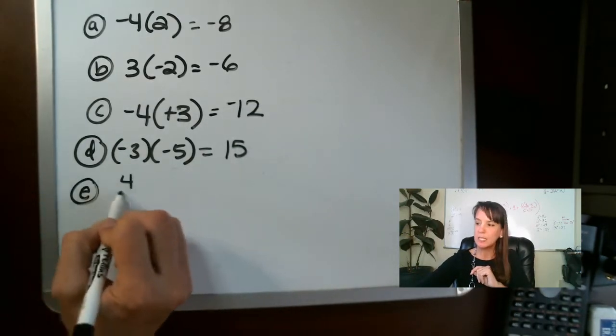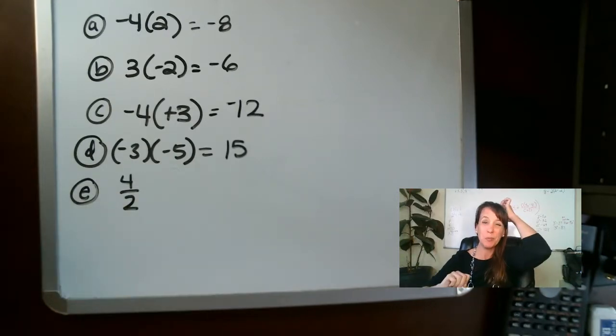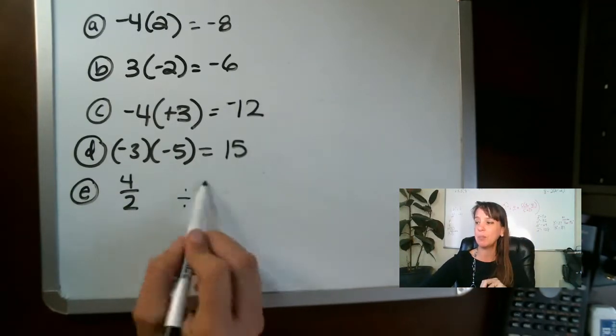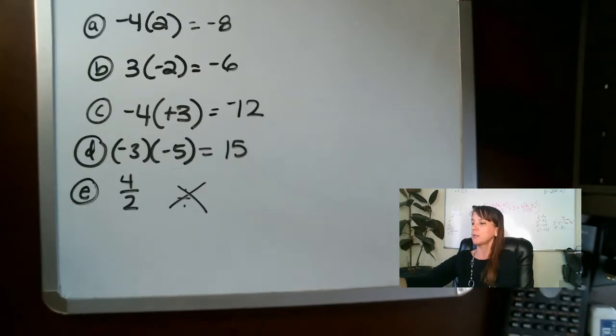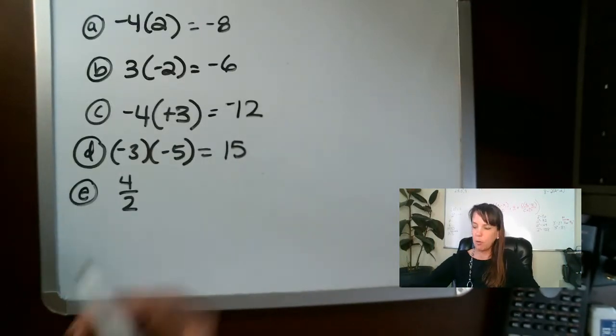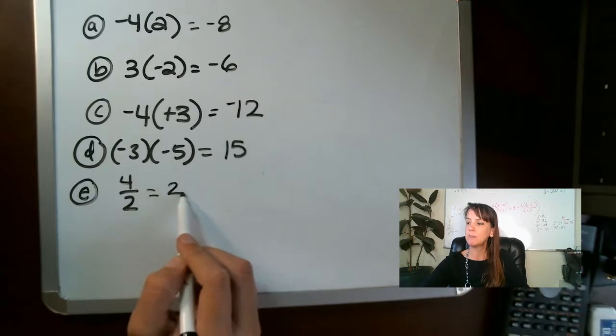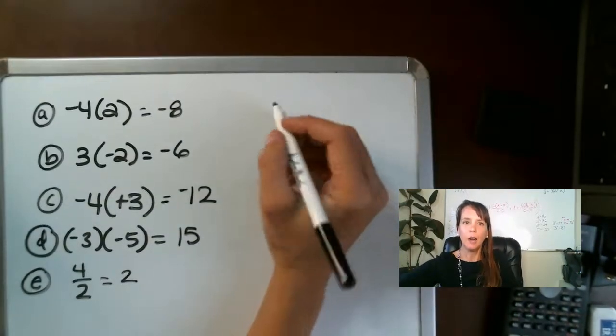E. We have four divided by two. Now remember, now that you're in algebra division, we get rid of this guy. We got rid of that. We're doing fractions. Okay, so we have four divided by two. They're the same signs, so it's two.